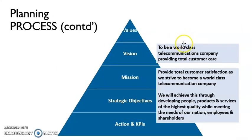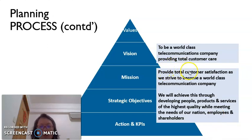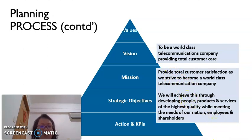Here we look at one example of a telecommunication company. The company's vision is to be a world-class telecommunication company by providing total customer care. The mission of the company is to provide total customer satisfaction — as they strive to become a world-class telecommunication company, they will achieve this through developing people, products, and services of the highest quality while meeting the needs of their nation, employees, and shareholders. The mission tells in more detail what the company wants to do and who they serve.